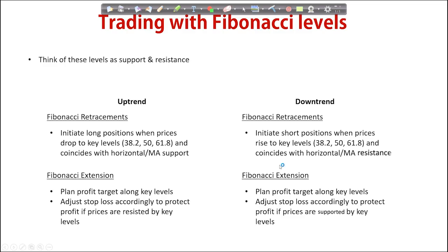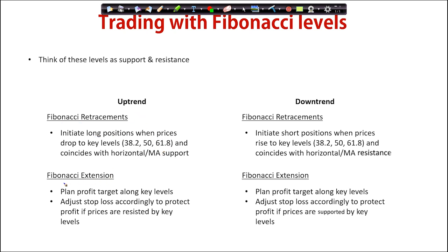So how can Fibonacci levels help you with your trading? Think of these levels as support and resistance. On an uptrend, you can use the Fibonacci retracement tool to initiate long trade positions when prices drop to key levels such as the 38.2%, 50%, or 61.8% level. The best scenario is for this level to coincide with horizontal or moving average support, telling you that prices are at a strong support and any further downside would be minimal. You can also use the Fibonacci extension tool to plan profit targets along the key levels and adjust stop losses accordingly.